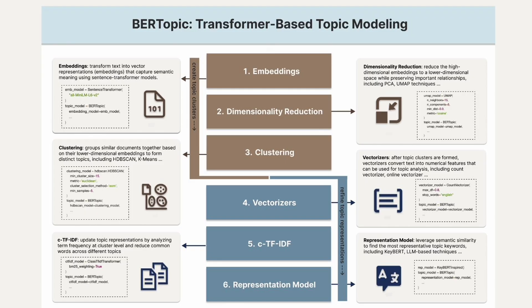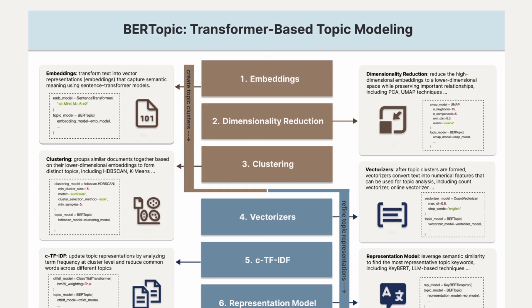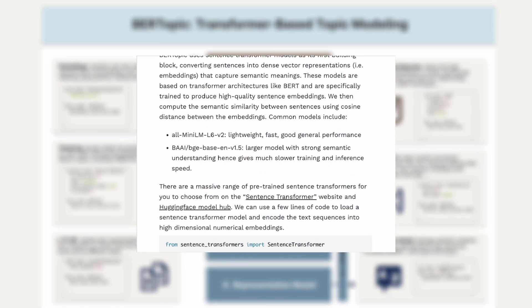Today we'll explore BERTTopic, a popular Python library for transformer-based topic modeling, and apply it to the use case of processing financial news efficiently, extracting trending topics from top Google search results, and refining topic keywords to be more representative. If you would like to read the blog post that covers these concepts in more detail, please check out the link in the description.